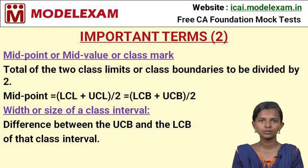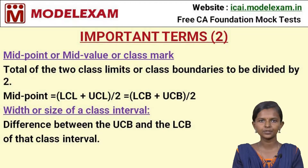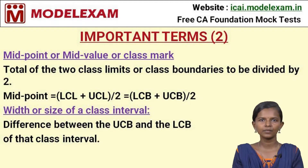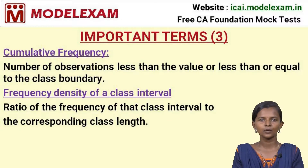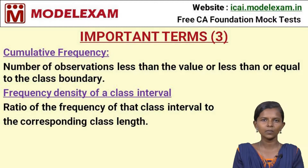Additional important terms: The midpoint (or mid-value or class mark) is the total of two class limits or class boundaries divided by 2: midpoint = (LCL + UCL) / 2, or (UCB + LCB) / 2. The width or size of a class interval is the difference between the upper class boundary and the lower class boundary. Cumulative frequency is the number of observations less than or equal to the class boundary value.